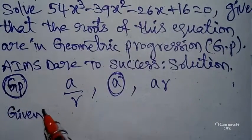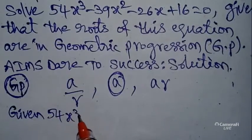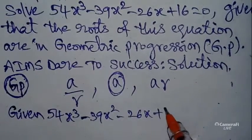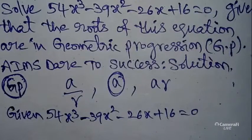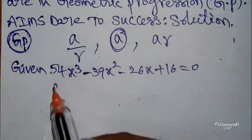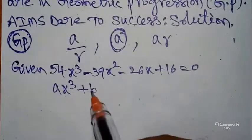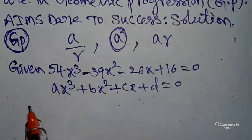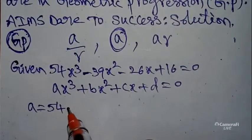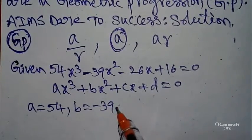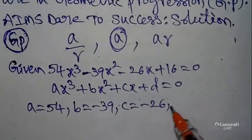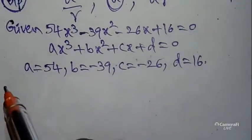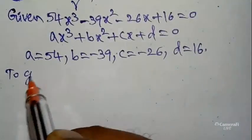The given equation is 54x³ minus 39x² minus 26x plus 16 equals zero. This is in the form ax³ + bx² + cx + d = 0, where a = 54, b = minus 39, c = minus 26, and d = 16.